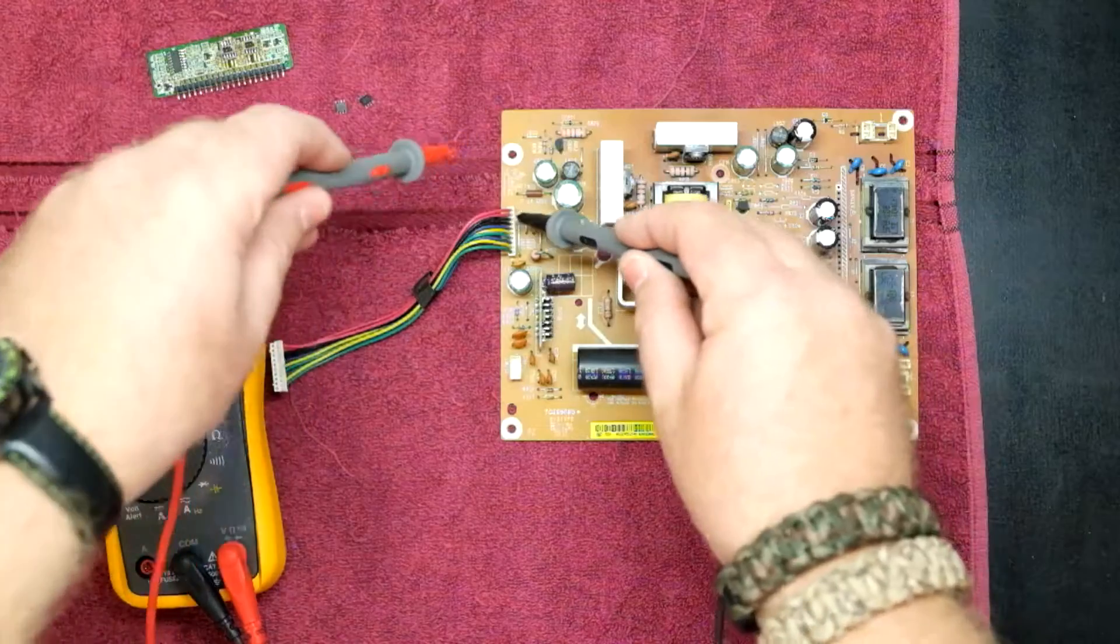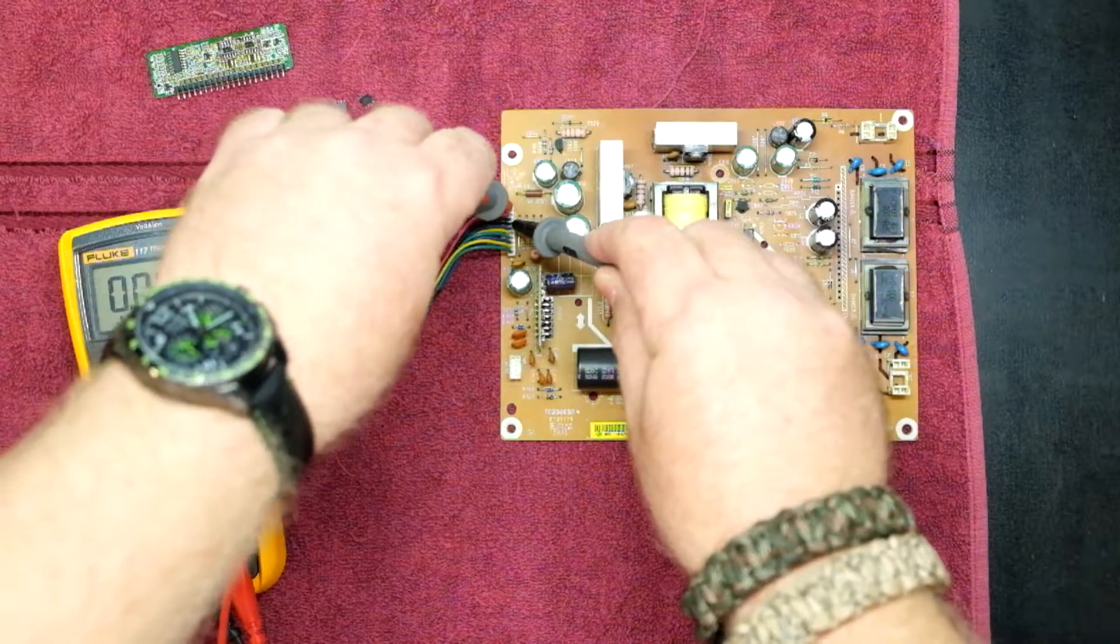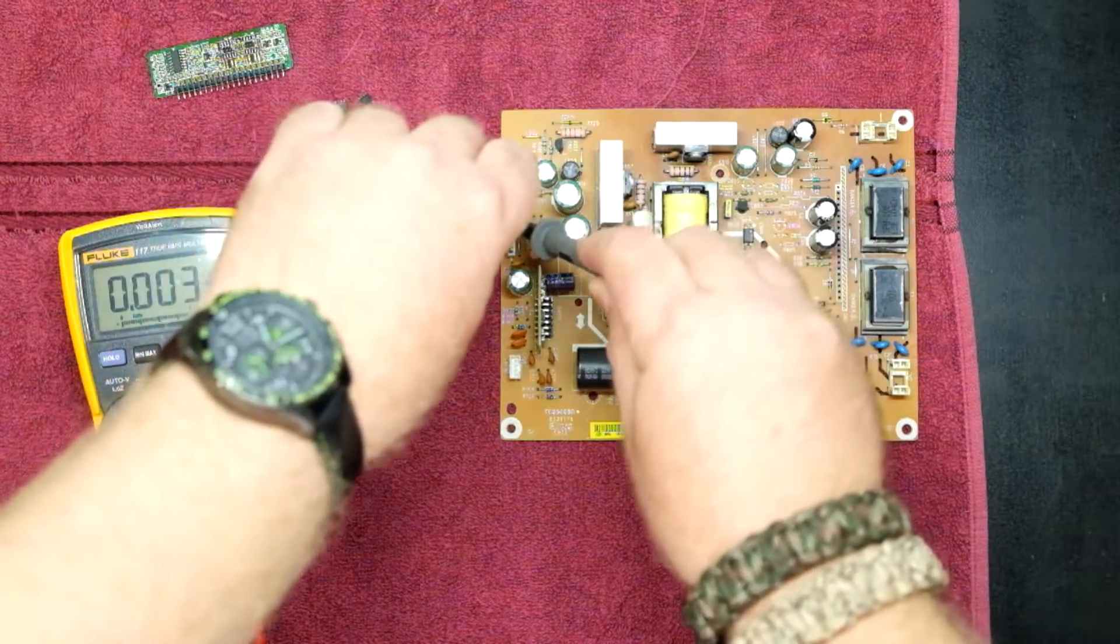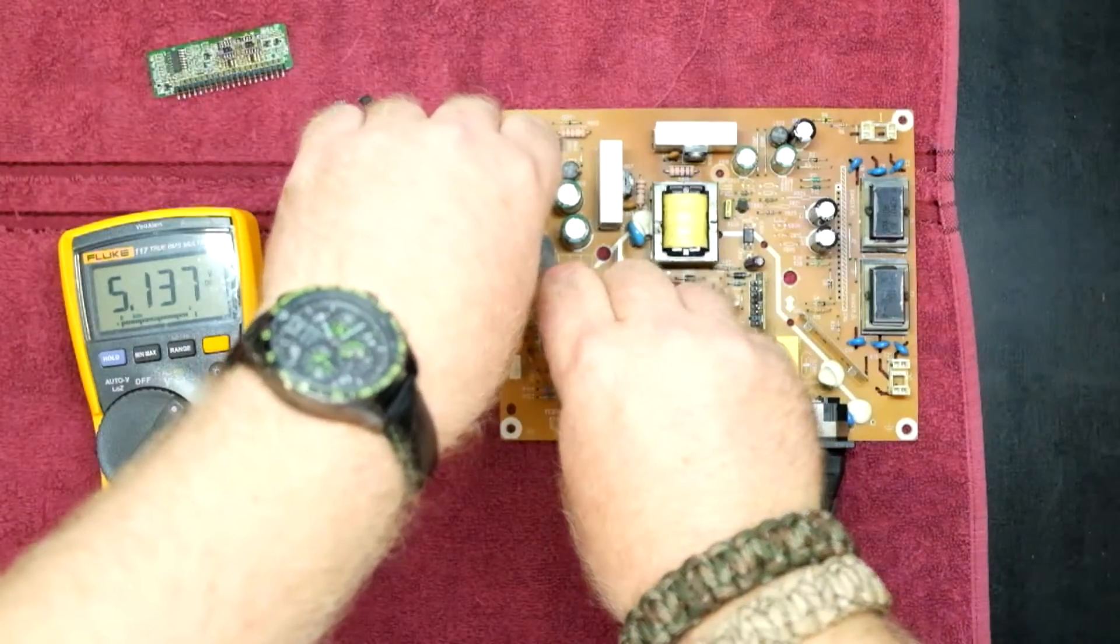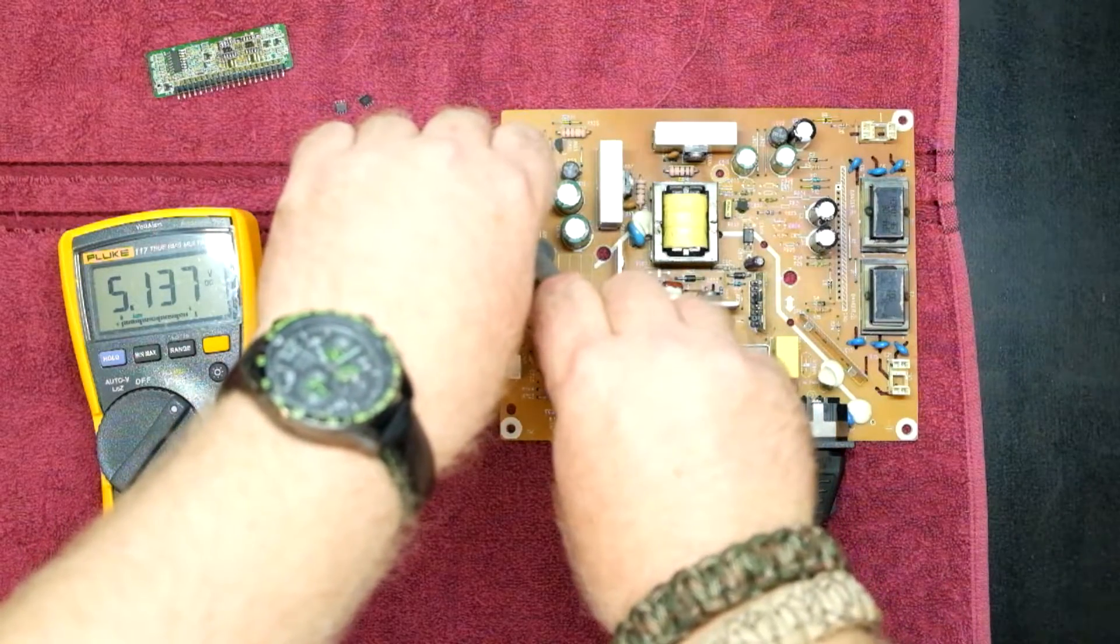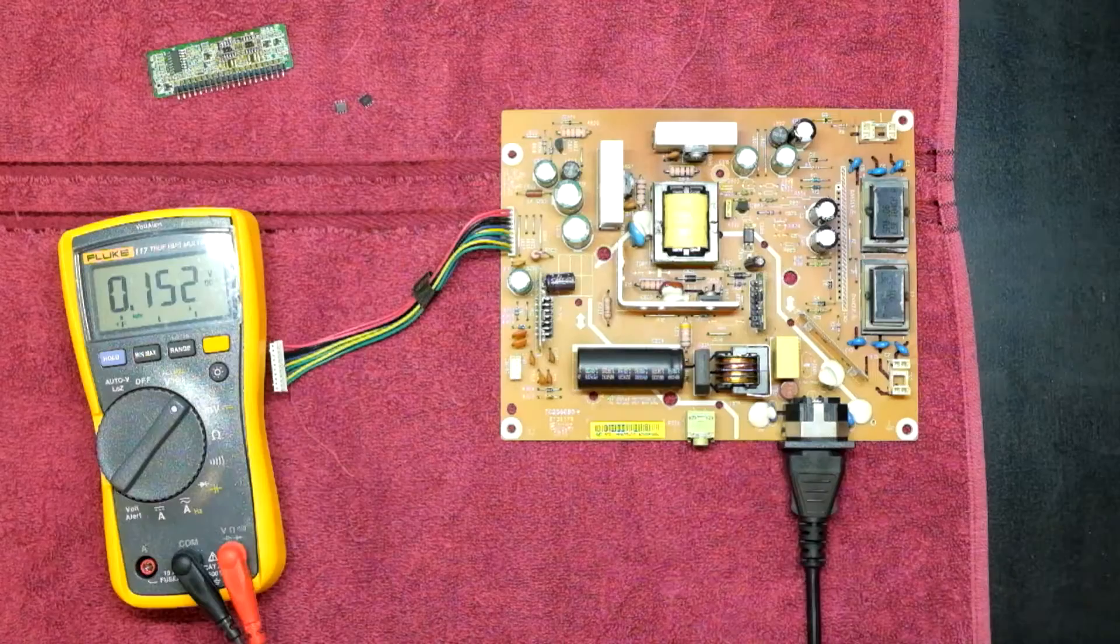These capacitors are doing the DC smoothing, and then you'll get your nice clean five volts DC coming out from the capacitor. That's the bare basics of a switch mode.